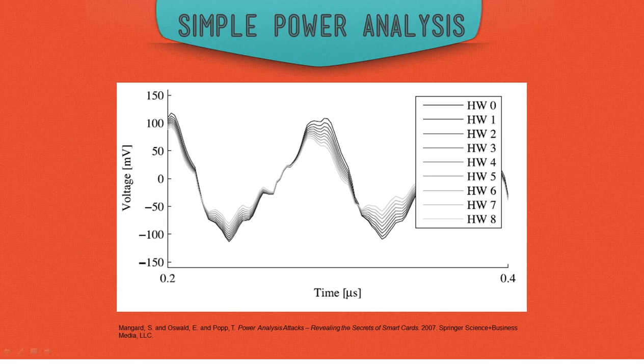With simple power analysis or differential power analysis, at the end of the day, we just need to measure power somehow. This may be a shunt inserted into the VCC or similar line, or it may take the form of a magnetic field probe or other probes.